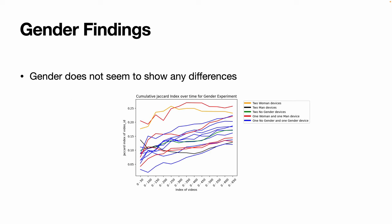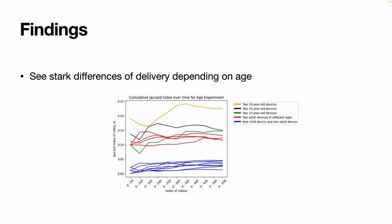For our experiment looking at user-declared gender, we see a lot of noise and no clear patterns that the declared gender impacts the delivery. However, we do see interesting results when looking at age. Each line here represents the similarity of feeds between two devices. The cluster of blue lines at the bottom shows the similarity between a device that's 13 years old and a device that's an adult, either 18 or 30 — they're not very similar to each other. However, two devices that are adults, or two devices that are the same age, are delivered feeds much more similar to each other, with the feeds of the two 18-year-old devices being the most similar.